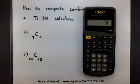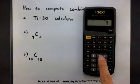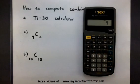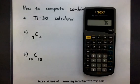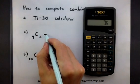The first thing is we enter in the 9. Then we press our second button, and 8, to do the combinations. Then press 2, and equals. This will give you 36.